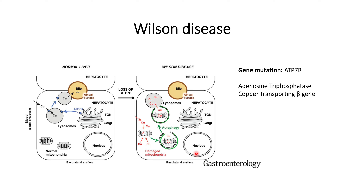Interestingly, cell death has not been observed in the hepatocytes of Wilson disease patients, even though increased copper accumulation was expected to cause it. Research conducted to find the reason for this discovered that the increase in copper triggers the autophagy pathway. This autophagy pathway takes care of the excess copper present within the hepatocytes. It has been found that the autophagy pathway is upregulated in Wilson disease compared to normal cells.